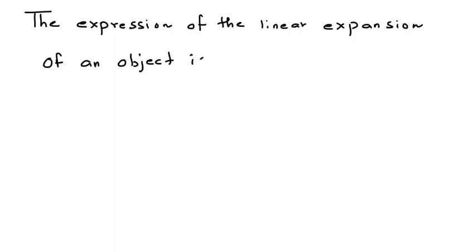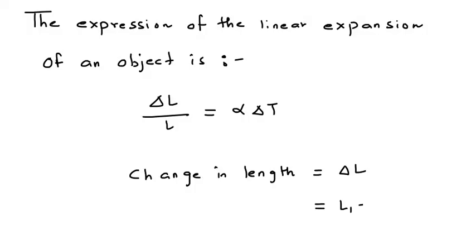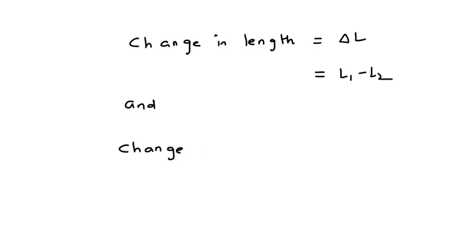The expression of the linear expansion of an object is given by ΔL/L = α ΔT. This is the formula. Now, change in length ΔL is given by L1 minus L2, and the change in temperature is equal to ΔT, and ΔT is equal to T2 minus T1.